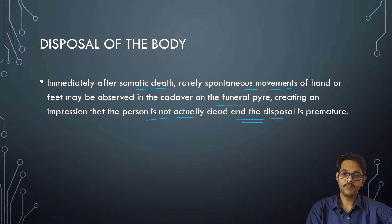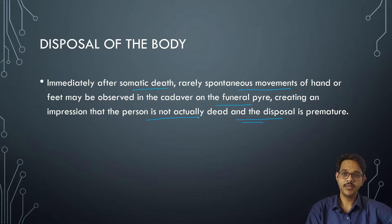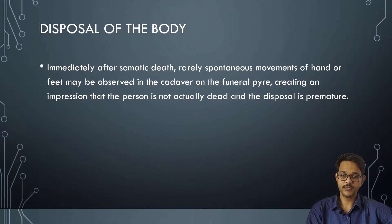This happens because of molecular death, which takes place usually after 2 hours of somatic death. During that period, muscle cells are still alive and sometimes muscle twitching may be seen, leading family members to think the person is still alive. This may lead to uproar and legal implications for the doctor.